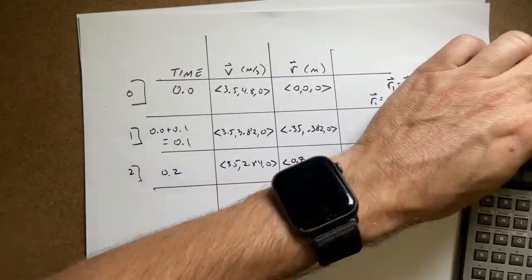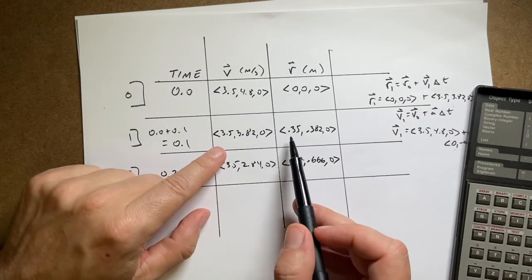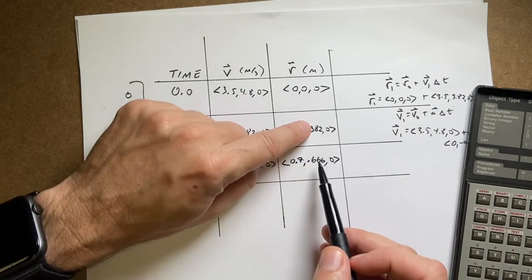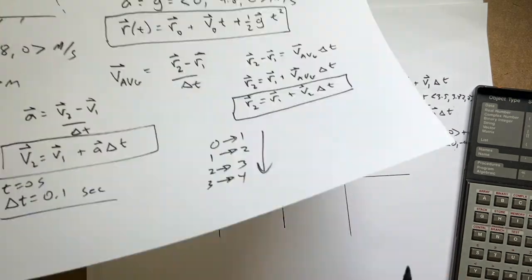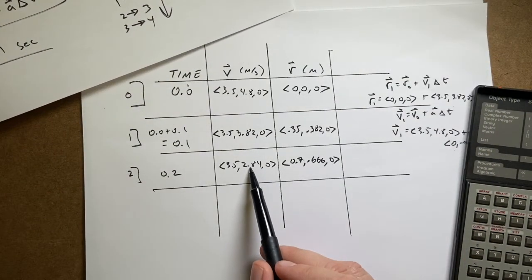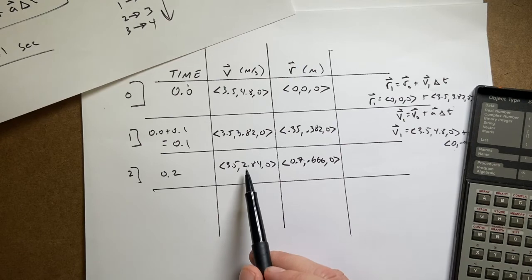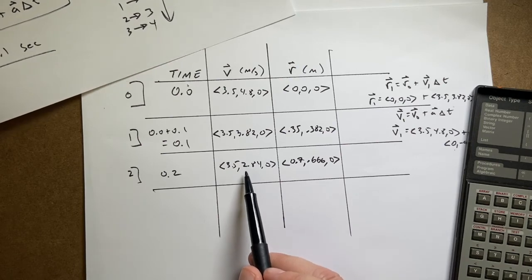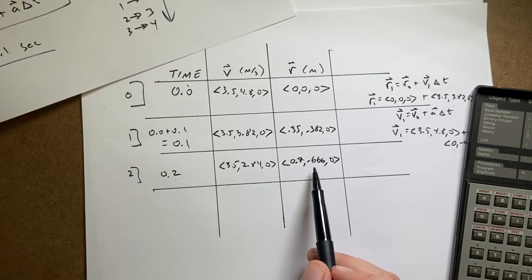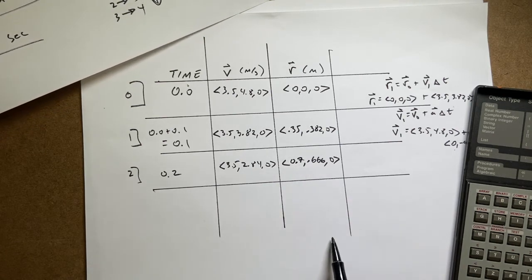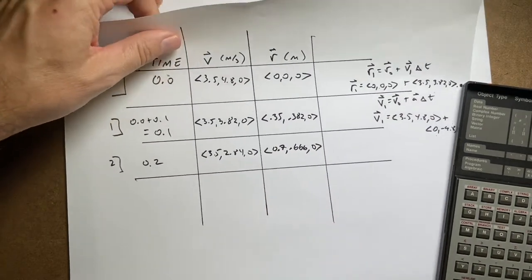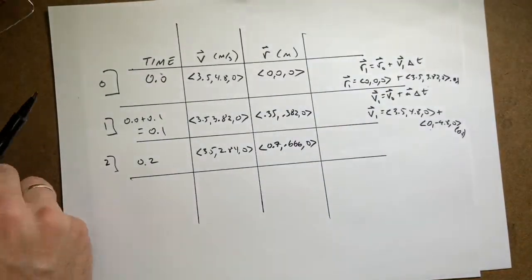Notice a couple things: the x velocity is constant — that's fine. The y position is moving up, which is what we'd expect. Eventually though, the y velocity will start decreasing, become negative, and then the y position will start moving down, eventually getting back to y = 0. I'd have to do a whole bunch of steps to get there, and I don't want to do that.